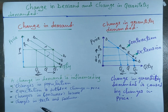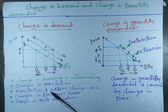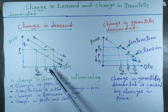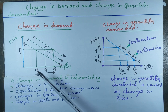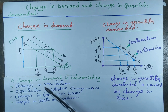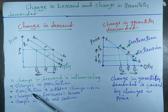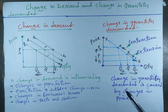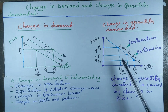The same applies to taste and fashion: when taste increases, quantity demanded will increase, and when taste falls, quantity demanded will fall. What you need to understand about change in demand is that it is affected by other factors that affect demand, and price is held constant at this level.